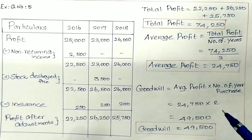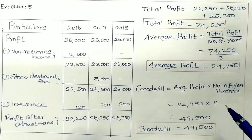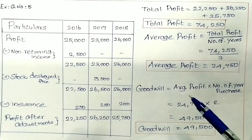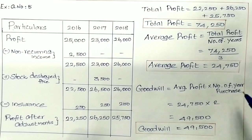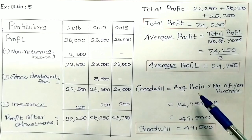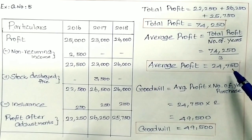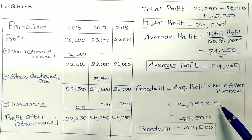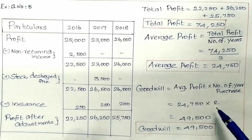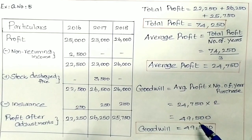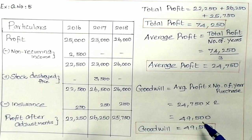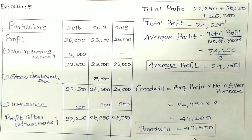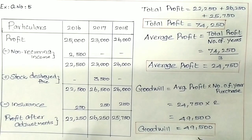In our question, goodwill is valued at 2 years' purchase. Therefore, goodwill = average profit × number of years of purchase = 24,750 × 2 = 49,500. The goodwill value for 2 years is 49,500 rupees.